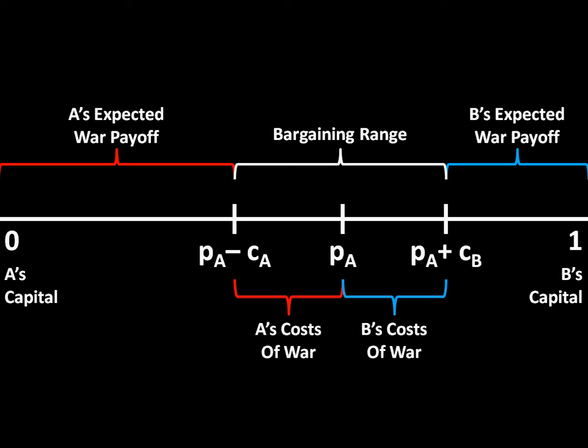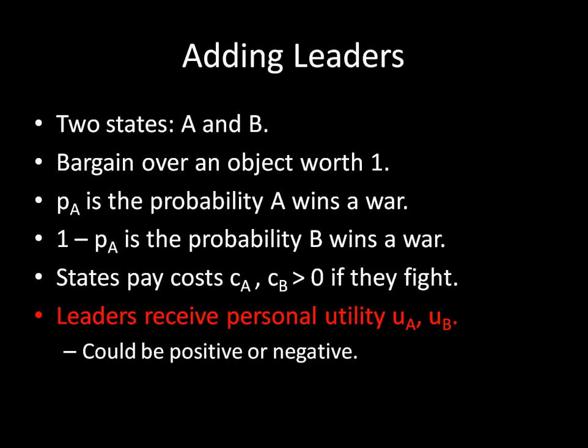Now let's add leaders to this equation. We're going to have leaders receive personal utility U-A and U-B for fighting. These values could either be positive or negative — I'm not making any assumptions about that yet. We're going to see what happens when we vary those values.